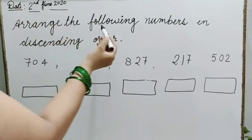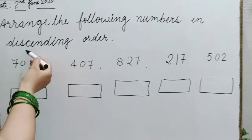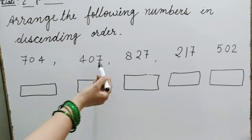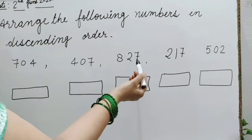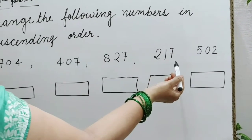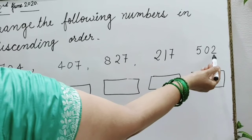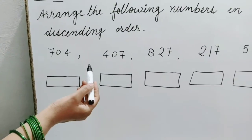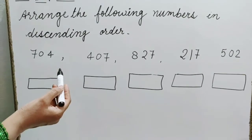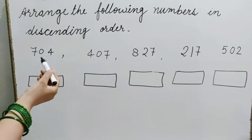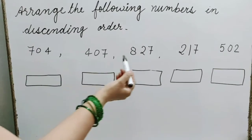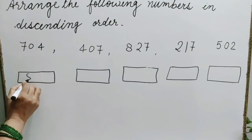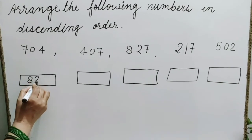Arrange the following numbers in descending order: 704, 407, 827, 217, 502. First of all, we have to search for the biggest number in these numbers. Which is the biggest number? 827. So we write first: 827.